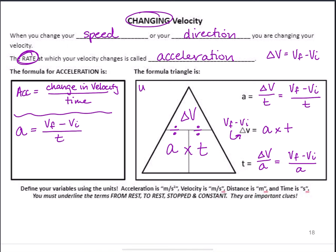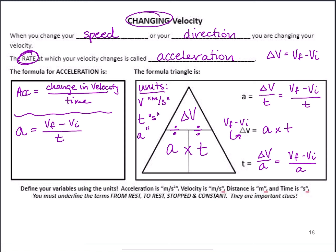The units are a little different here. Our velocity values are still meters per second, and time is seconds, but the acceleration unit is a new one: meters divided by seconds squared. That's what happens when we look at our calculation for acceleration — we've got our velocity values and we're dividing by time, so that's what ends up happening to our units.